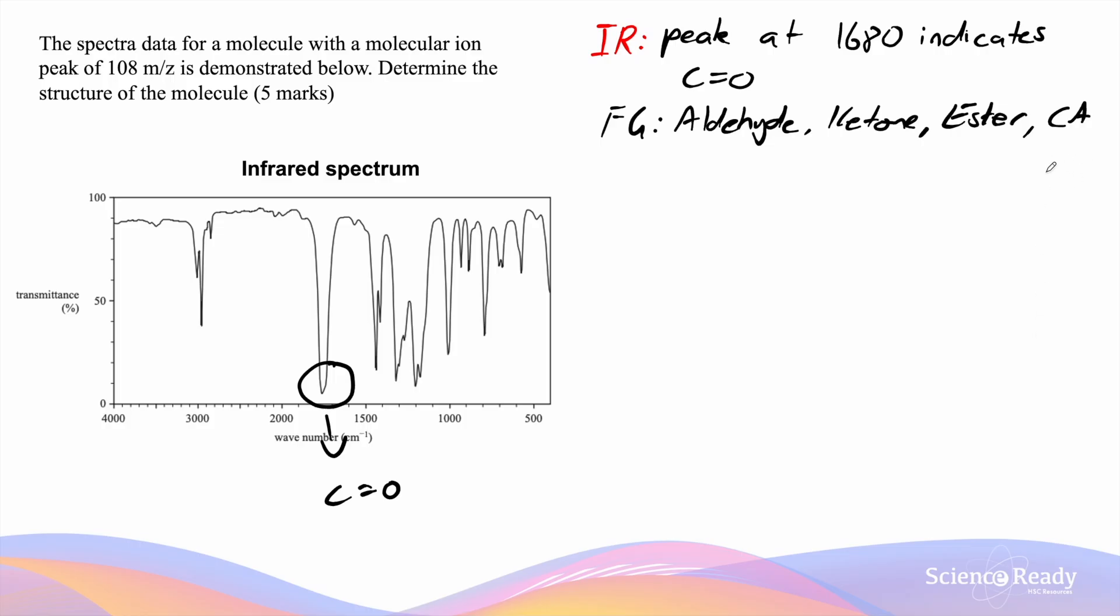However, in order for it to be a carboxylic acid, there must be a broad peak around the 3000 range. We do not see that in this infrared spectrum, and therefore we can eliminate that as one of the possible functional groups of our compound.